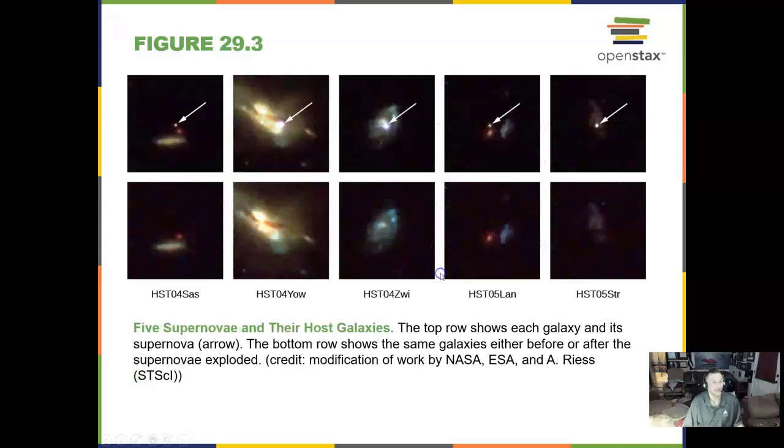Two of the greats, Einstein and Hubble. Here we go. Five supernovae and their host galaxies. So we've seen this before, where a supernova, one star, completely blowing itself apart, becomes brighter than the galaxy it's in combined.